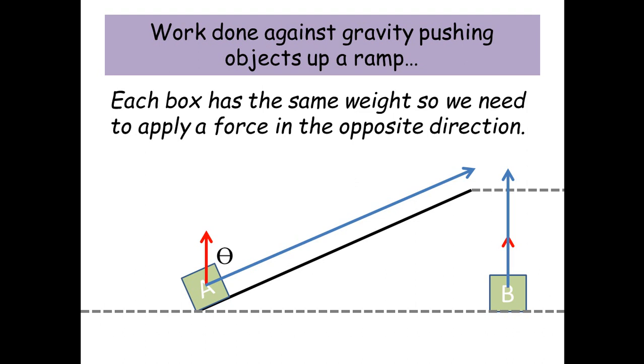Now, this is where theta comes in. Because cos theta, if I times cos theta by this displacement vector, I actually end up with the same distance going up. So the displacement in the direction of the force is actually the same for A and B. And this is why the work done against gravity is actually the same.